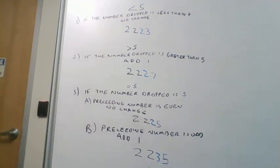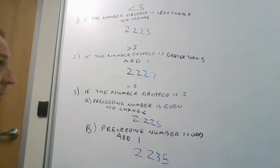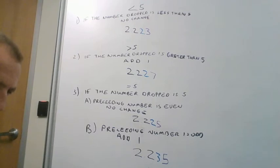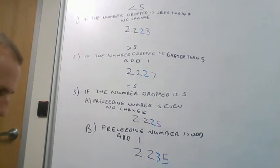We're going to talk about rounding, and we may round numbers differently in this class than what you've seen before. Typically, if a number ends in a five we round up, but that means we round up five times and down four times on average, which ends up with some rounding error if you do it a lot of times. So we do things differently when a number ends in a five in this class.